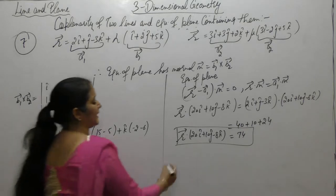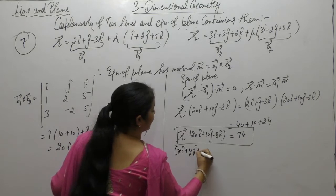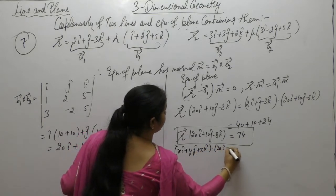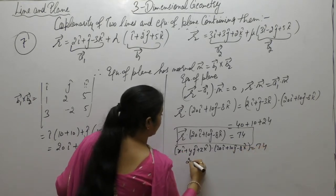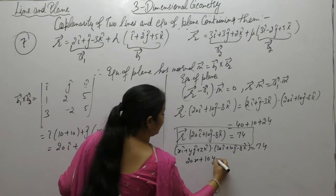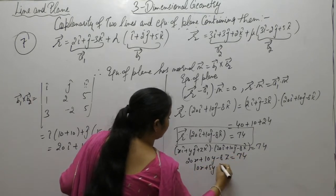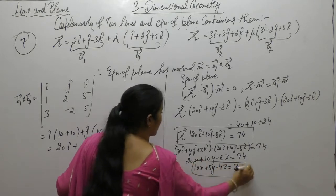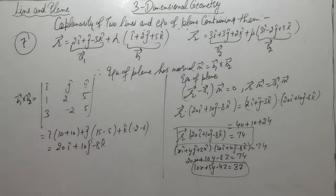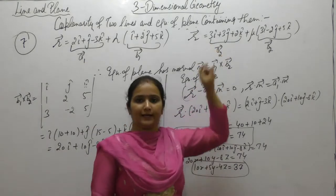To convert to Cartesian form, replace r vector with xi plus yj plus zk. We get 20x plus 10y minus 8z equals 74. Taking 2 common: 2 into 5 and 2 into 4, giving the simplified Cartesian form of the plane. Note that instead of a1 here, we can also use a2.